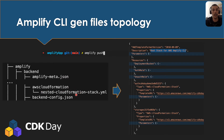When you run 'amplify push', this will generate a folder called 'awscloudformation' containing the root stack of your Amplify app. This stack references all the nested stacks for each of your categories. For example, the category is 'auth', and it points to the template uploaded to S3 by the Amplify push command.